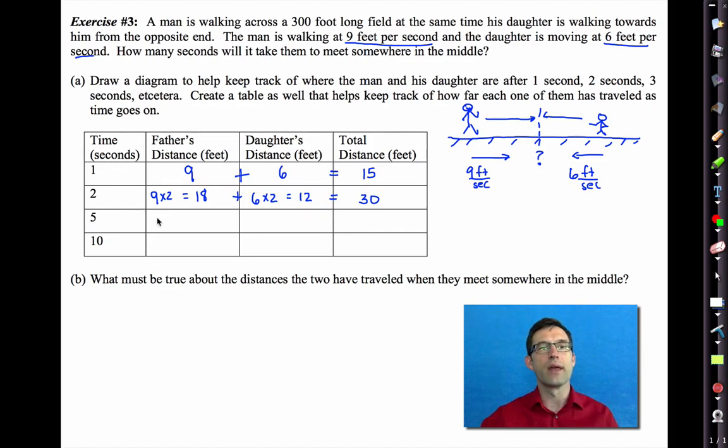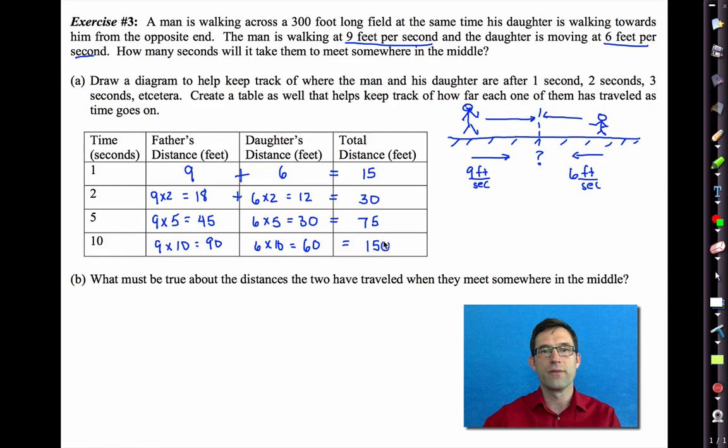After five seconds. And again, these times are just picked at random. What we're trying to do is we're trying to establish a pattern after five seconds, the father has walked 45 feet. The daughter has walked 30 feet. And so they've walked a total of 75 feet. And finally, after 10 seconds, the father has walked 90 feet. The daughter has walked 60 feet. And together they've walked 150 feet. So we're just getting a feeling for what's going on physically here.